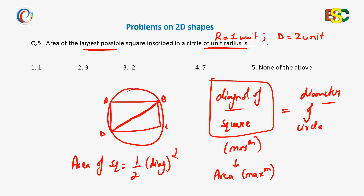The area of the square is half of the diagonal squared. Since the diagonal equals the diameter, it is half of 2 squared, which is half of 4, giving an answer of 2 square units — which is option number 3.